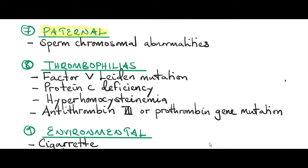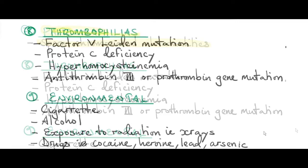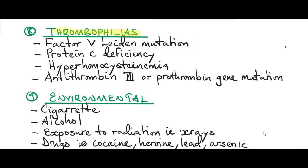Paternal causes of miscarriages include sperm chromosomal abnormalities. In these cases, if a woman remarries a different man, she will have no further miscarriages. Thrombophilic disorders have also been identified as causes, including Factor V Leiden mutation, protein C deficiency, hyperhomocystinemia, and antithrombin-3 and prothrombin abnormalities. The end result is coagulation and thrombosis of blood vessels that carry blood to the fetus and placenta, leading to partial or complete occlusion and reduced blood supply.